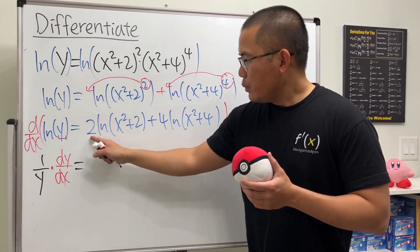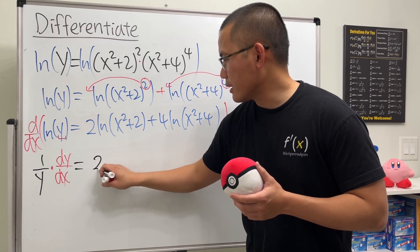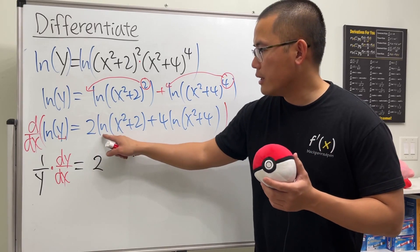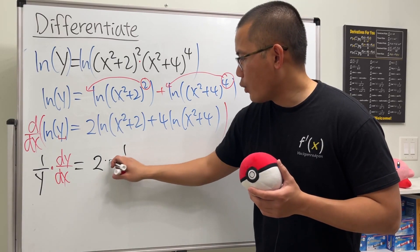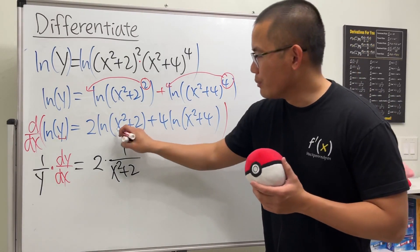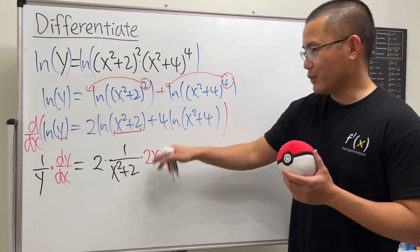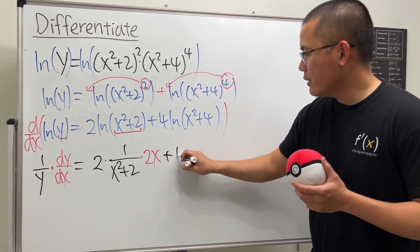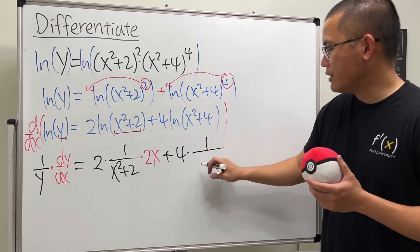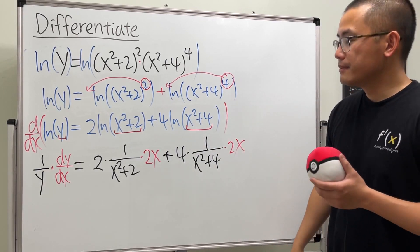Here we have 2, right, so this is just a 2 right here. The constant 2 just keep it and then we multiply by the derivative of ln of that, and that's going to give us 1 over the inside which is x² + 2. But don't forget the chain rule - we multiply by the derivative of the inside which is going to give us 2x. And then we continue. We add 4 times the derivative of this which is just going to be again 1 over whatever this is, and then use the chain rule here we multiply by 2x.